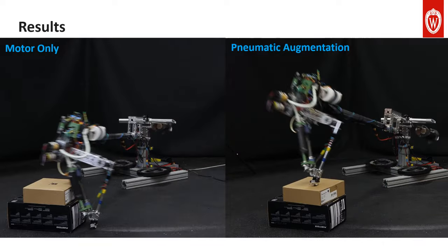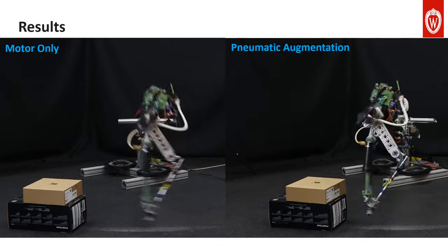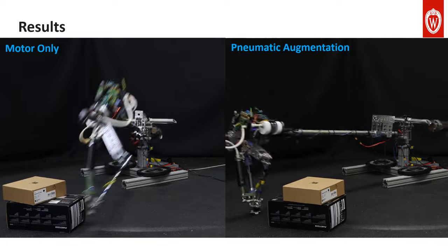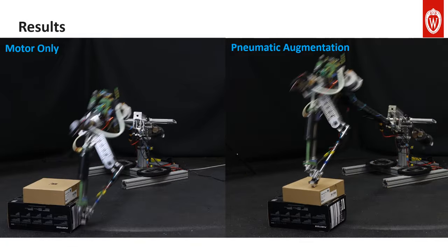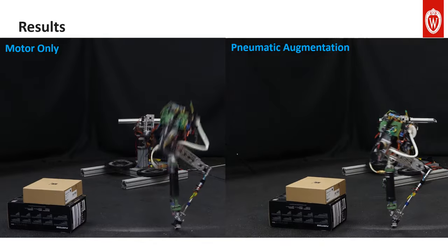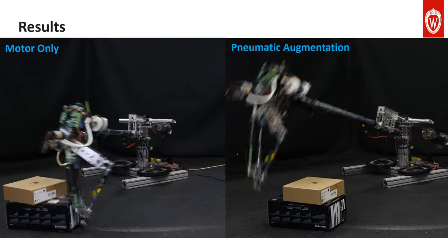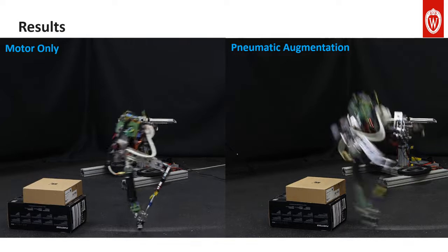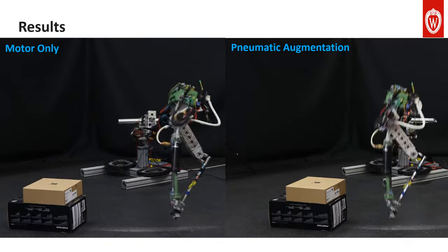The power amplification can be useful for the robot to perform explosive behaviors such as jumping over large obstacles. Here we demonstrate the scenarios that without using the pneumatic augmentation, the robot fails to move over the obstacle, while with the pneumatic augmentation, the robot can store the energy first and then release it to jump over the obstacle successfully.